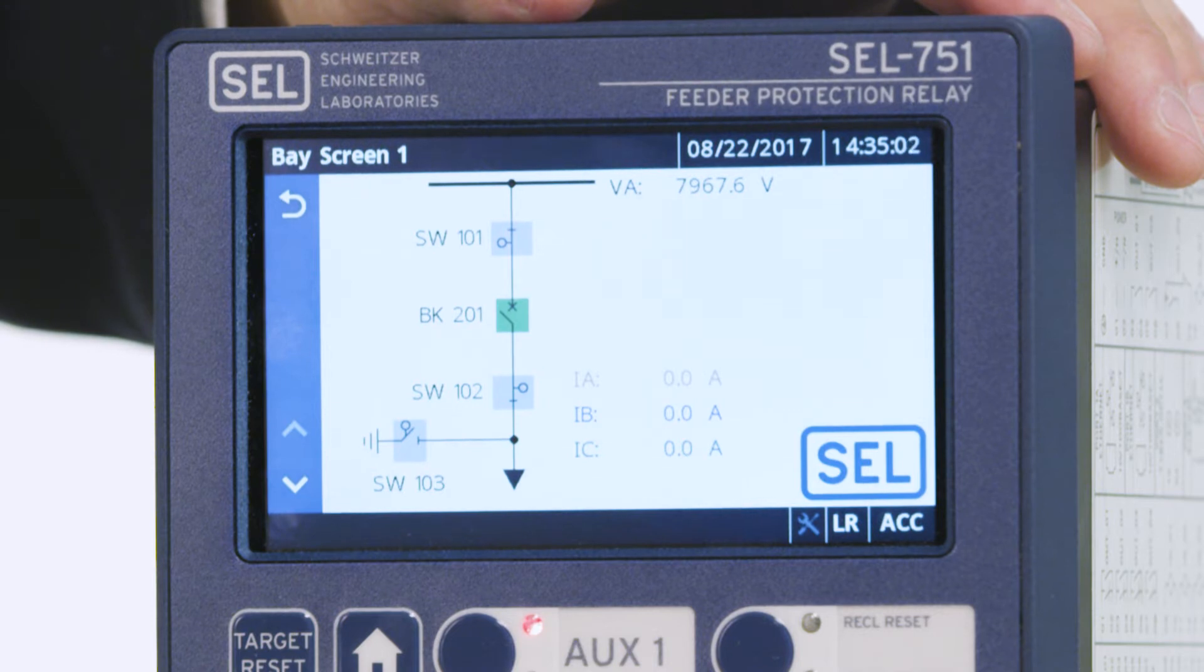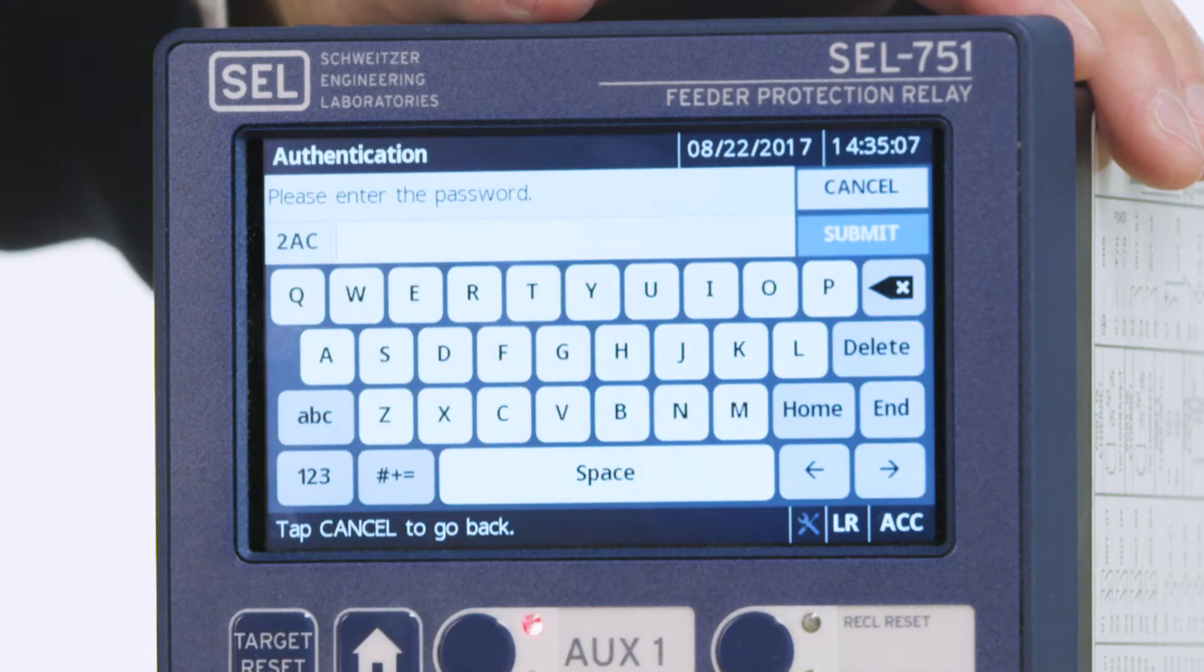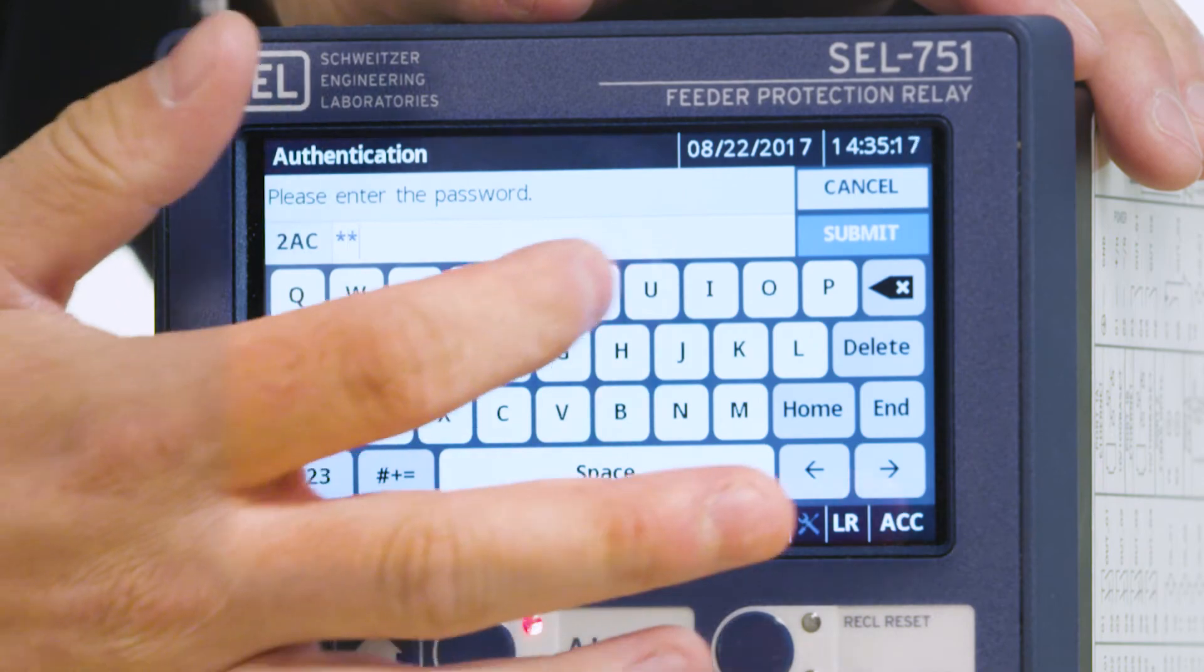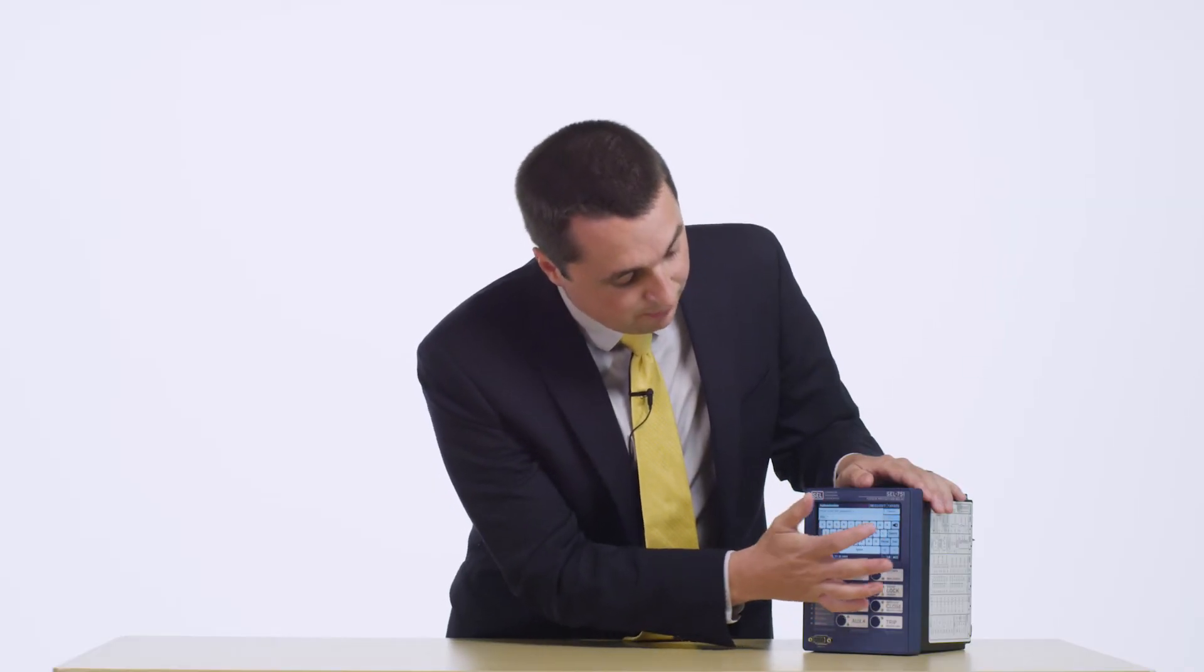Here on the one-line diagram, we can interact with the breaker directly by selecting the breaker on the screen. It has now prompted me to enter a password to be able to change the state of the breaker. I'm going to enter the password now. As you know, SEL recommends that you change the default passwords for security reasons.